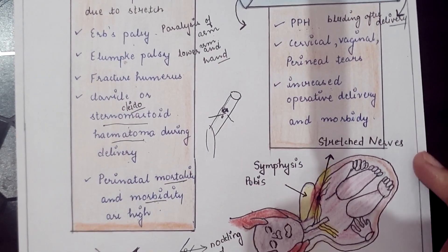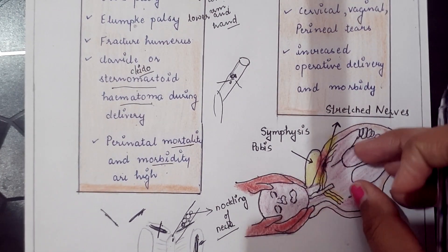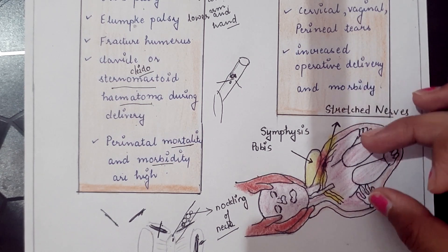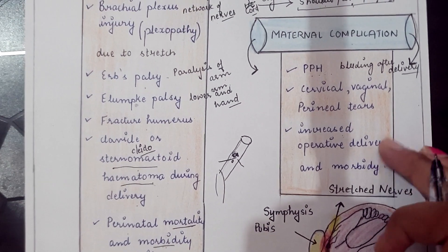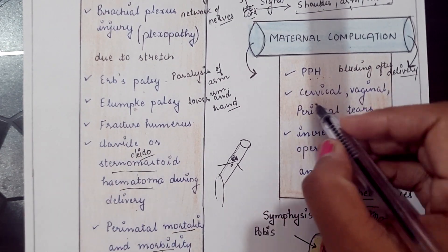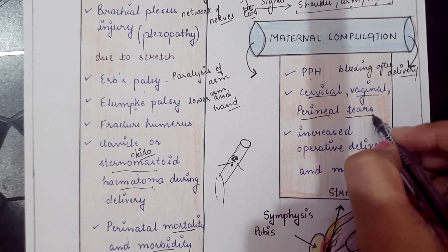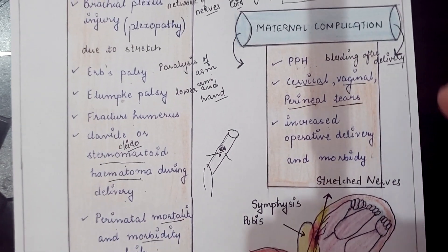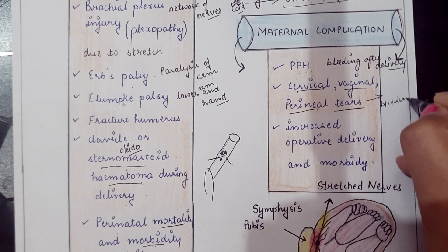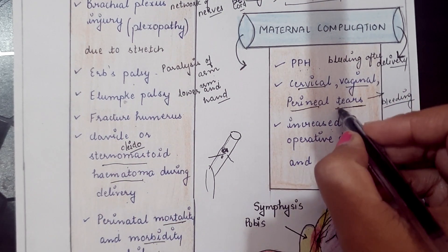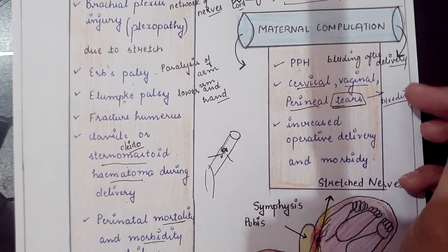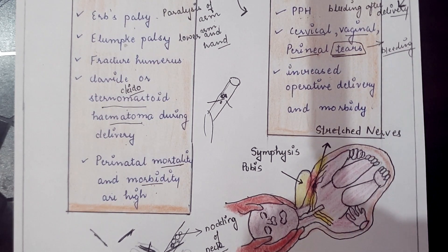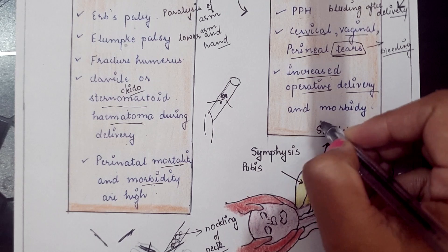In shoulder dystocia, the underlying cause is often fetal macrosomia, which leads to uterine over-distension that may cause postpartum hemorrhage. Cervical, vaginal, and perineal tears occur due to over-stretching of the birth canal, which may also cause bleeding. Sometimes these tears are so severe that surgical correction is needed. Increased operative delivery and morbidity are also maternal complications.